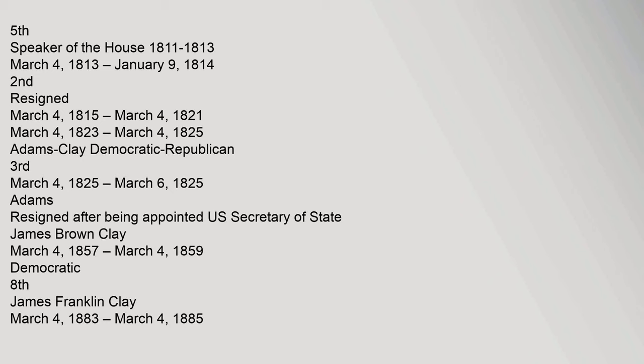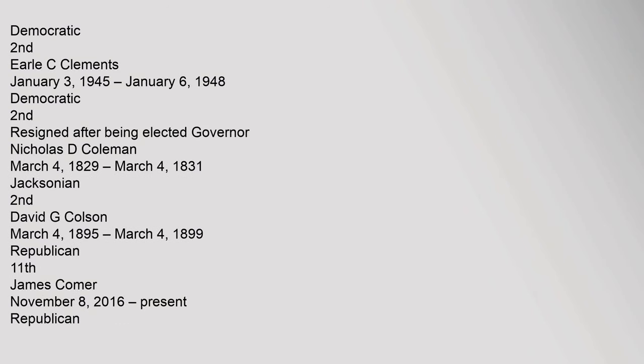James Brown Clay, March 4, 1857 to March 4, 1859, Democratic, 8th. James Franklin Clay, March 4, 1883 to March 4, 1885, Democratic, 2nd. Earl C. Clements, January 3, 1945 to January 6, 1948, Democratic, 2nd, resigned after being elected Governor. Nicholas D. Coleman, March 4, 1829 to March 4, 1831, Jacksonian, 2nd.